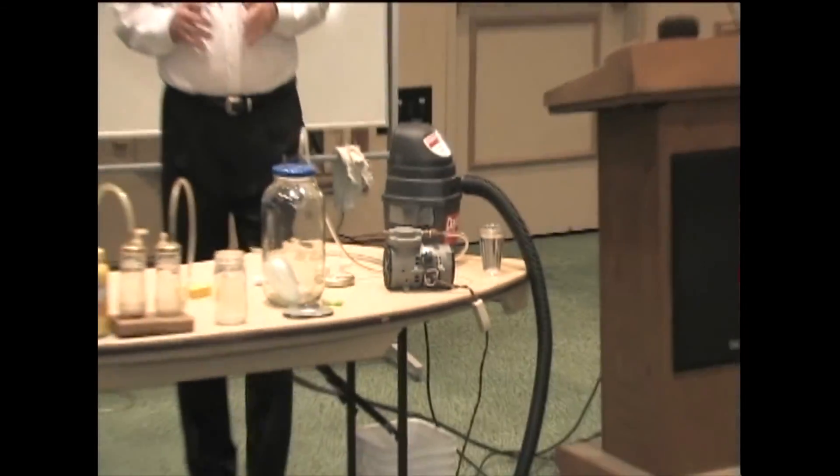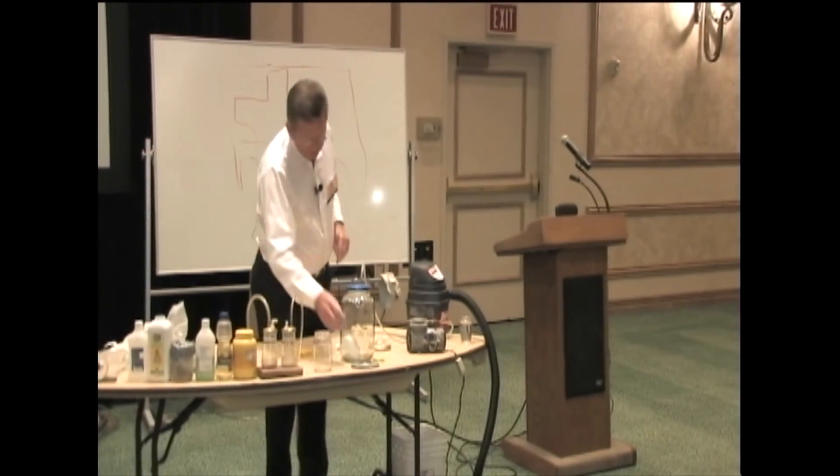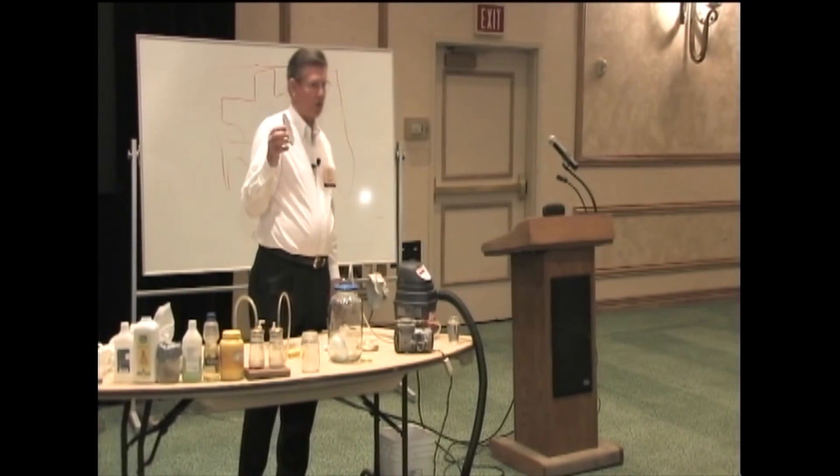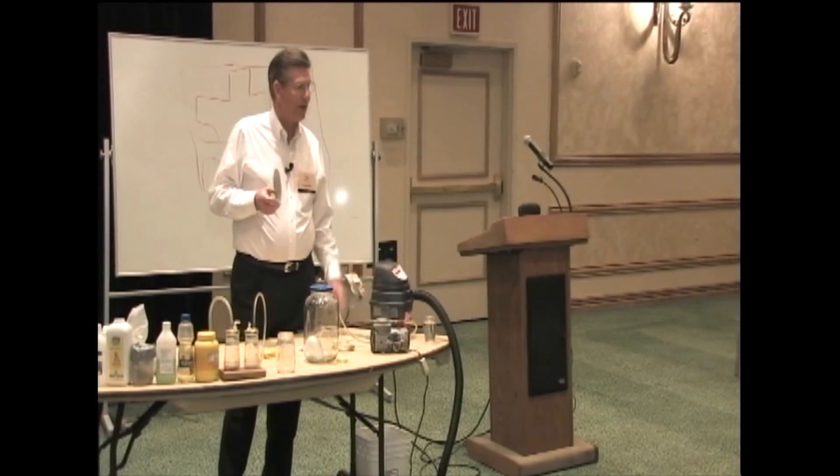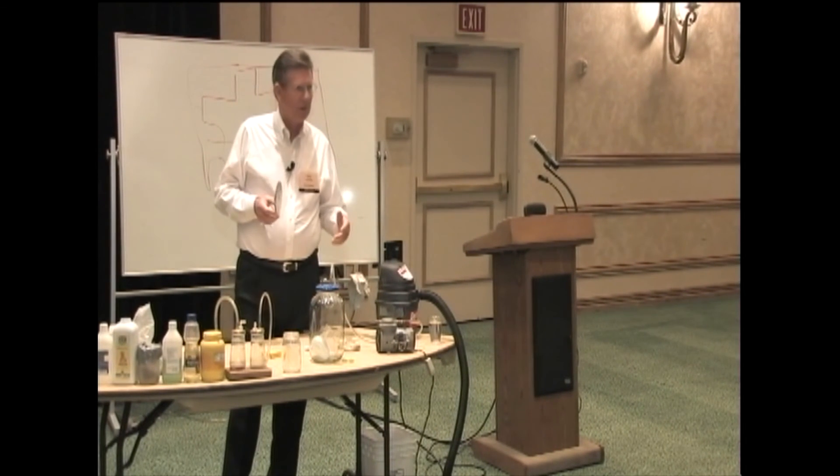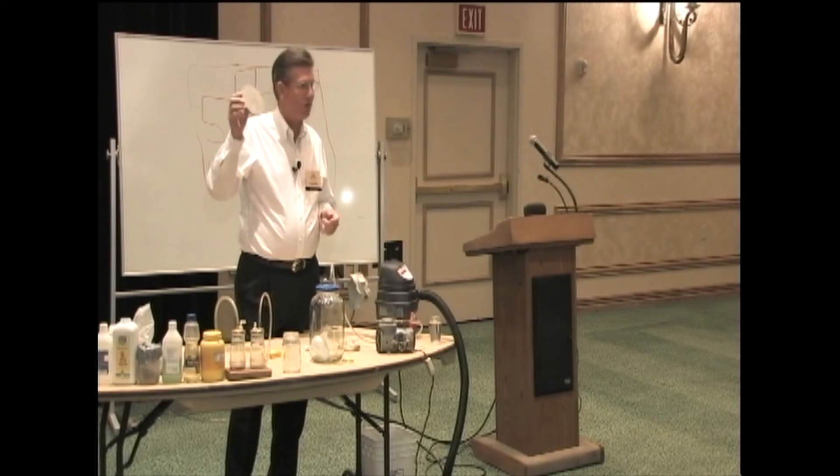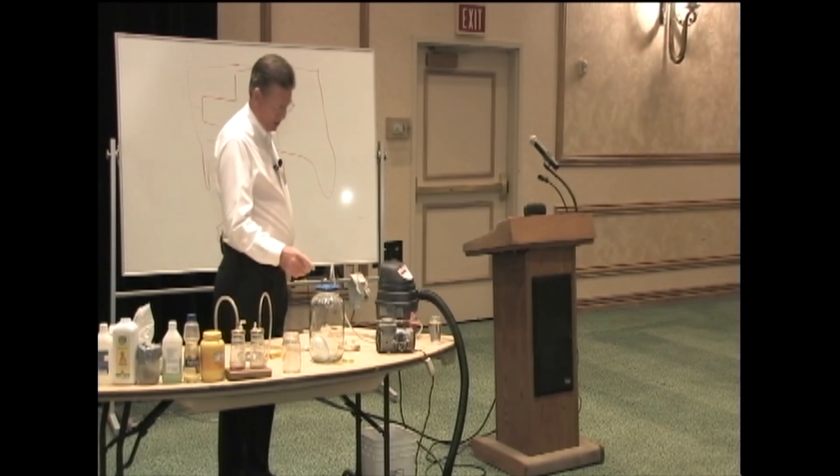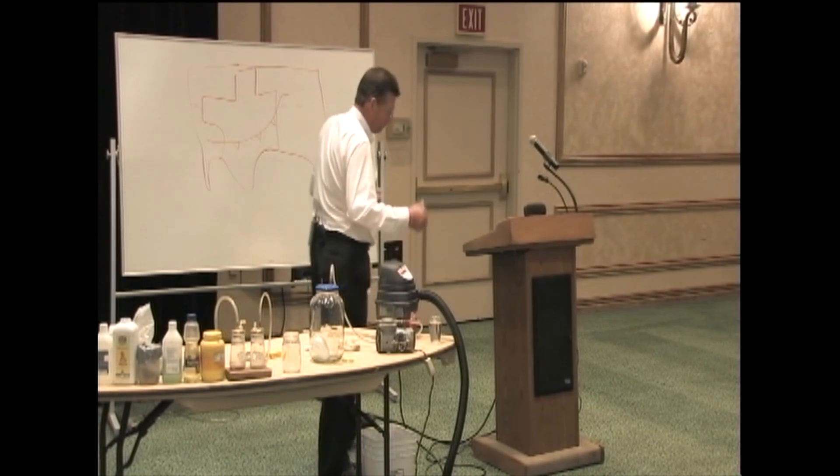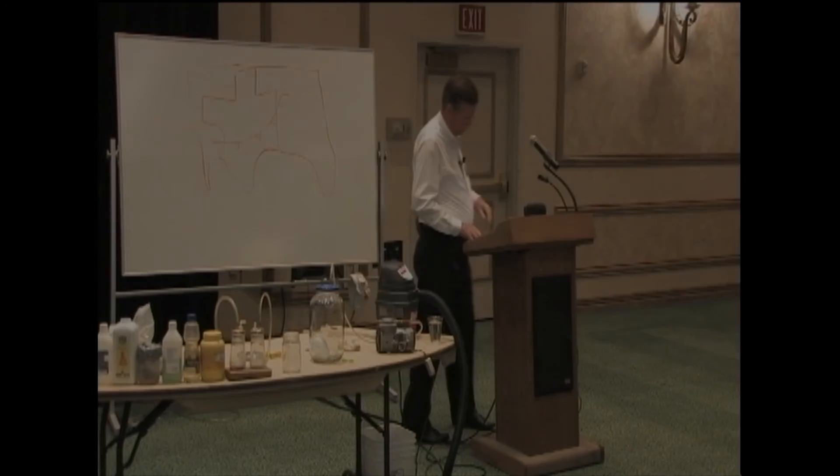But we use a centrifugal fan, also sometimes we use big PD blowers. This is neither one. There's more than one way to produce a vacuum. You can do it with rotary sliding vanes, you can do it with centrifugal fans, you can do it with rotary lobe blowers. This happens to be just a diaphragm vacuum pump.